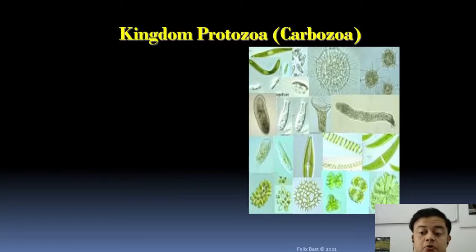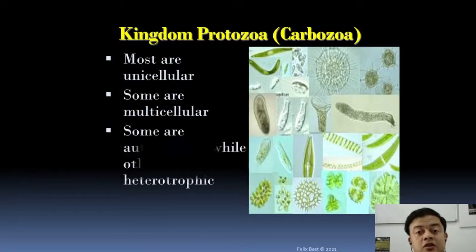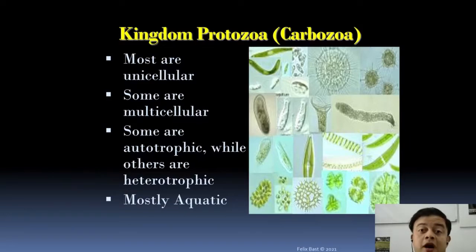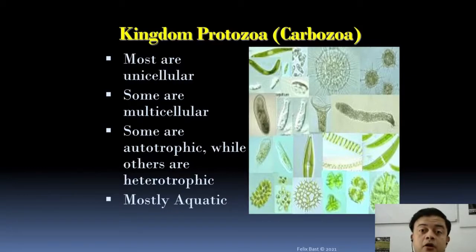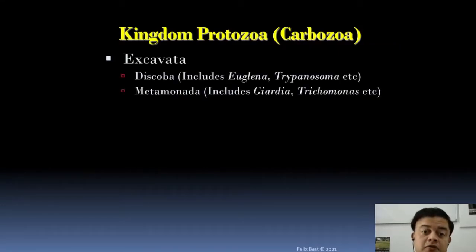Kingdom Protozoa, also known as Carbozoa: most are unicellular, some are multicellular as exceptions; some are autotrophic while others are heterotrophic — it's an admix of various unicellular eukaryotes, and mostly aquatic. This kingdom is really important for aquatic ecologists, marine botanists, and limnologists. If you take a drop of water from a pond and look under the microscope, chances are very high that it contains hundreds of protozoa. Excavata is classically one of the core groups of protozoa, and then Rhizaria whose position is ambiguous.